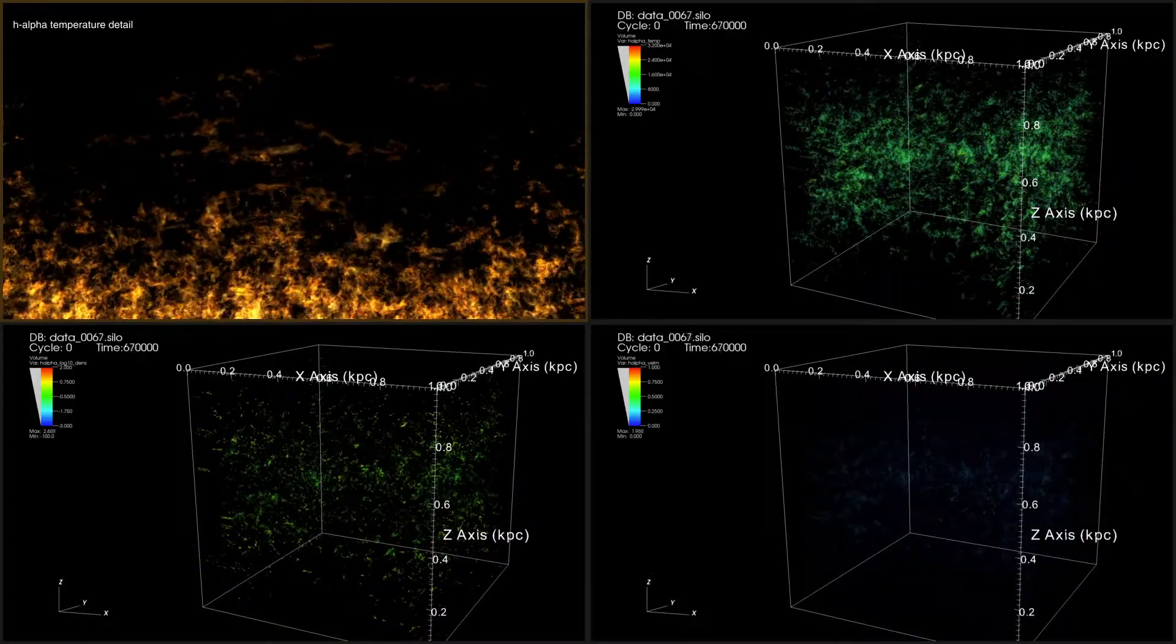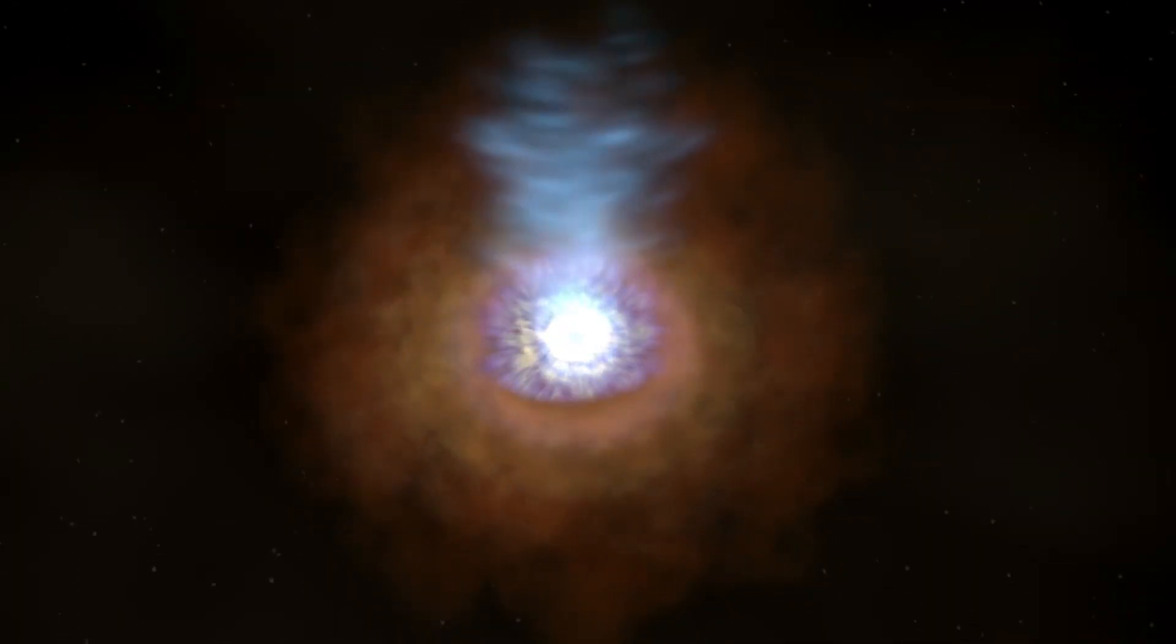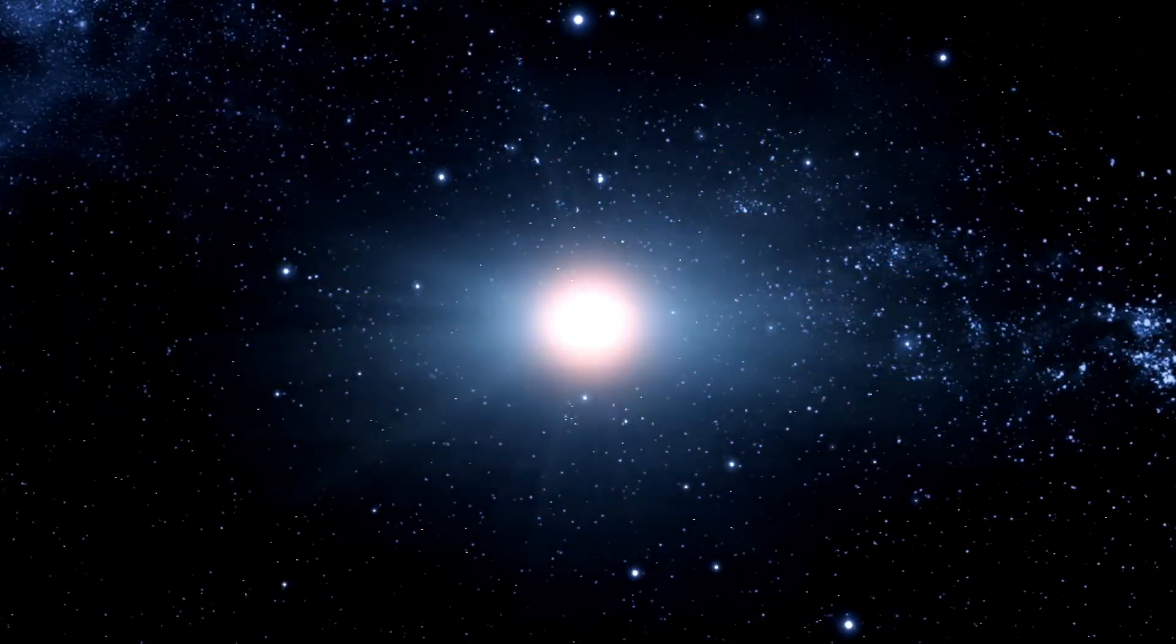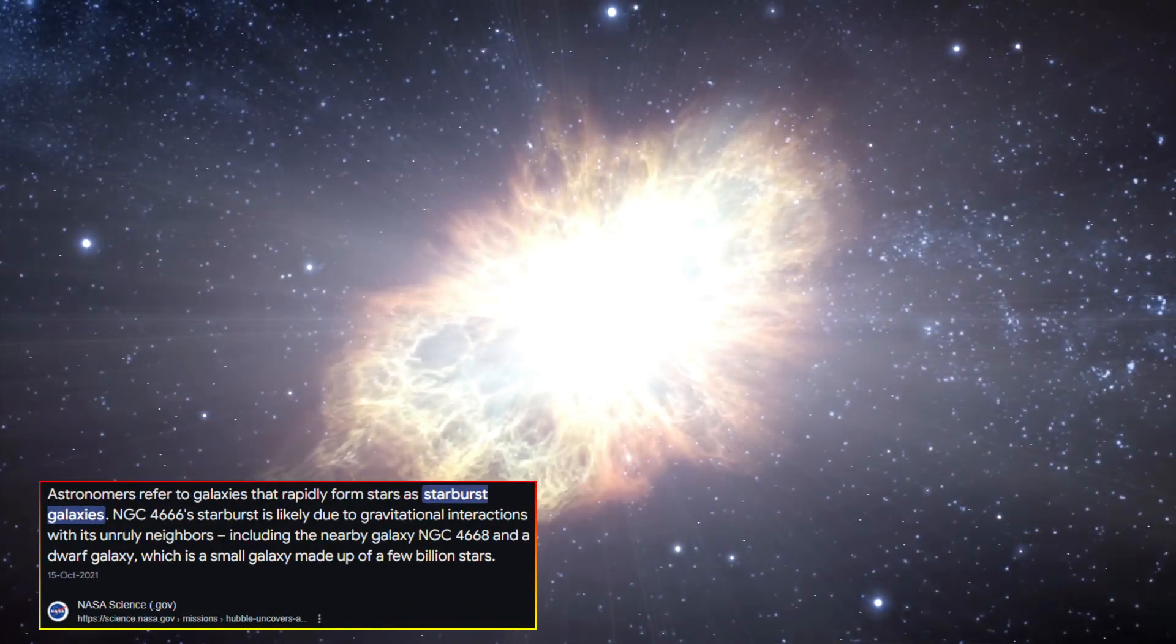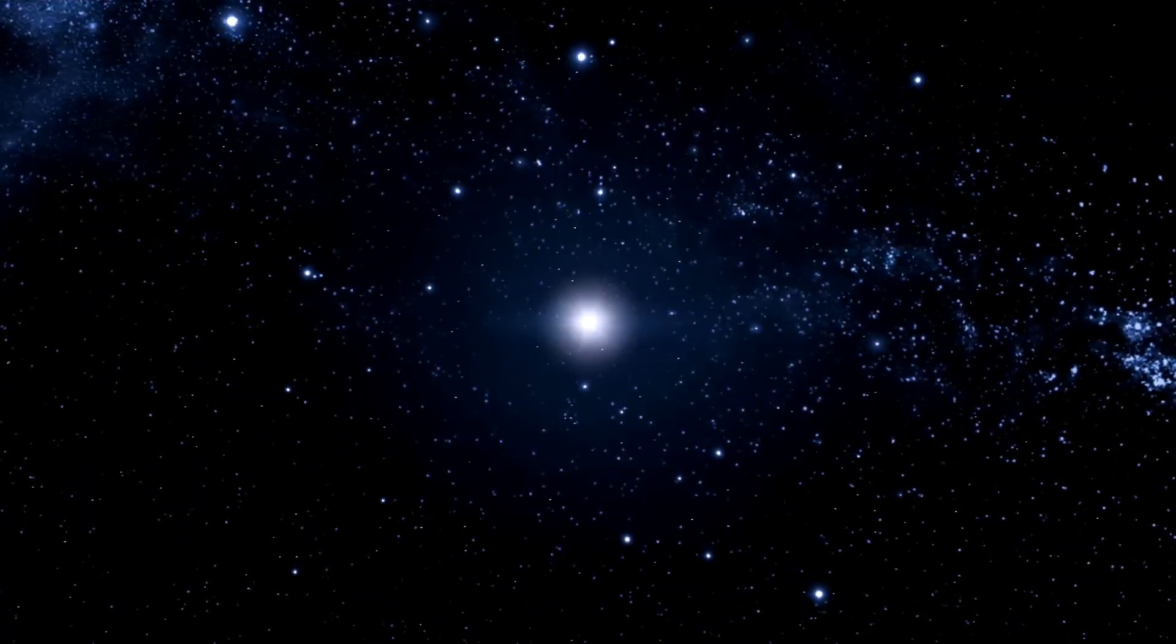This structure, likely formed by stellar explosions and winds, provides a localized example of the processes that may have created the much larger Fermi and Erosita bubbles. The presence of these bubbles in multiple galaxies suggests that such events are not rare occurrences, but rather a universal process shaping galaxies throughout the cosmos.